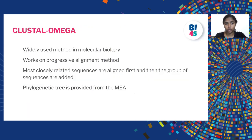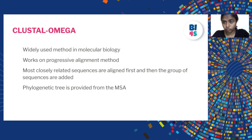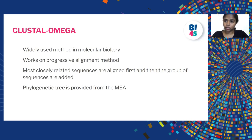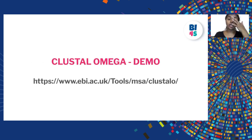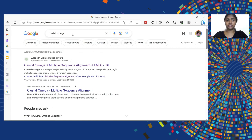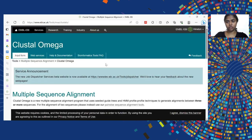Clustal Omega is a widely used method in molecular biology that works on the progressive alignment method, where the most closely related sequences are aligned first and then groups of sequences are added progressively. Clustal Omega provides a phylogenetic tree for the multiple sequence alignment — it performs both multiple sequence alignment and provides a phylogenetic tree within the tool itself. If you search for Clustal Omega in Google, you will get the first result which is run by EMBL-EBI, and when you click on it, the Clustal Omega page opens.